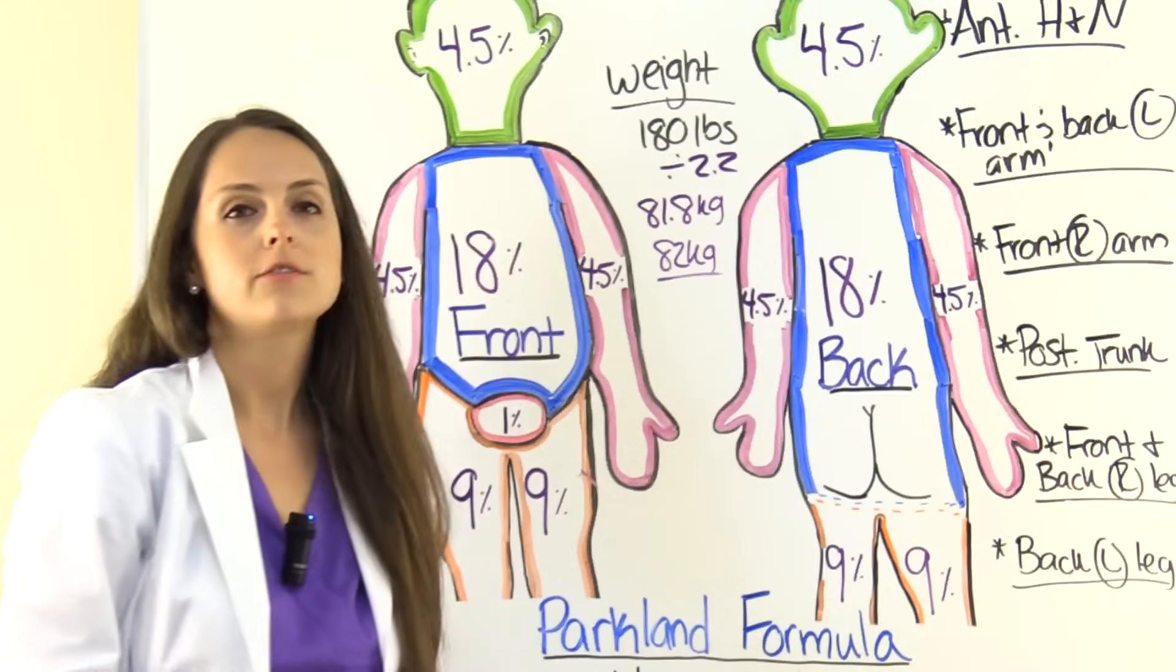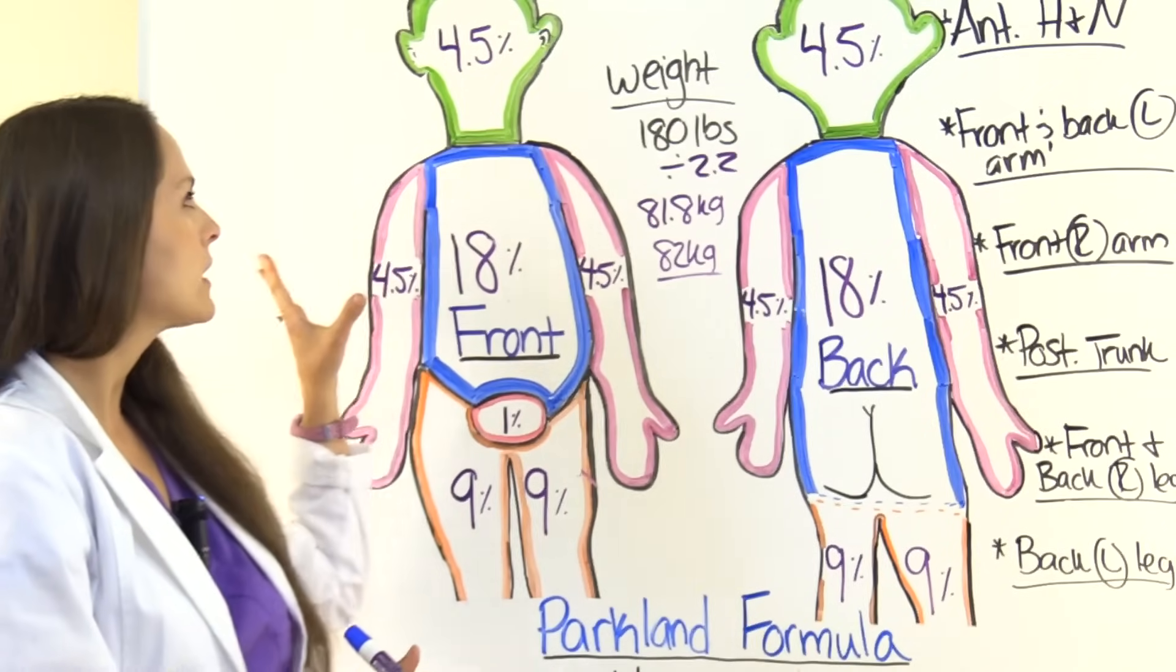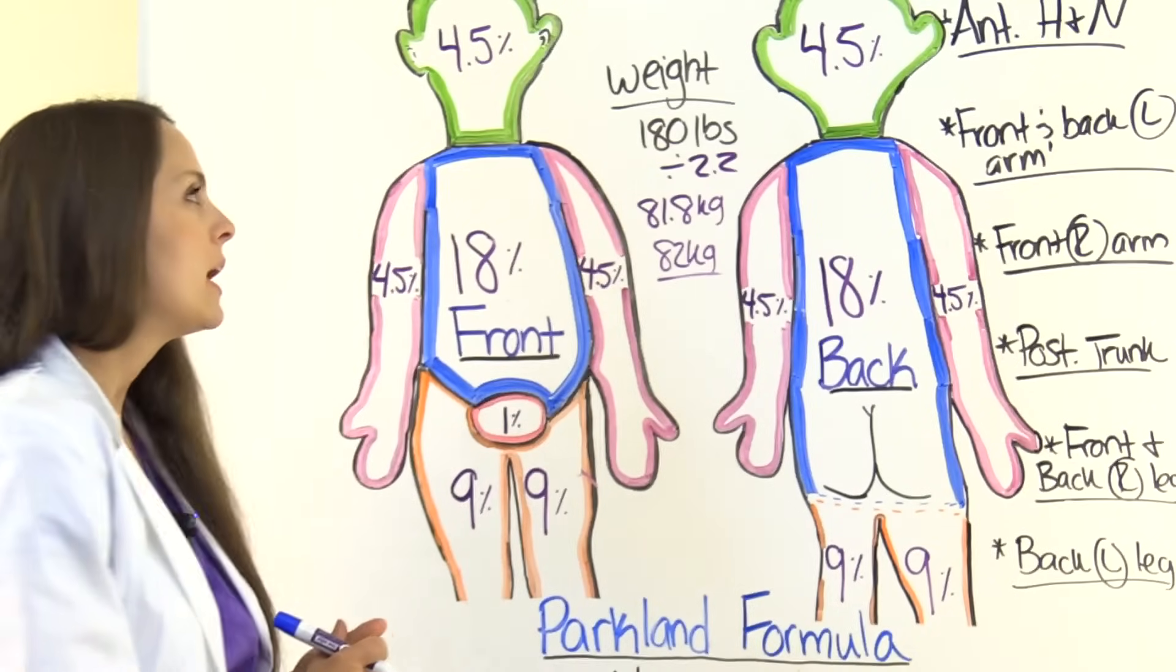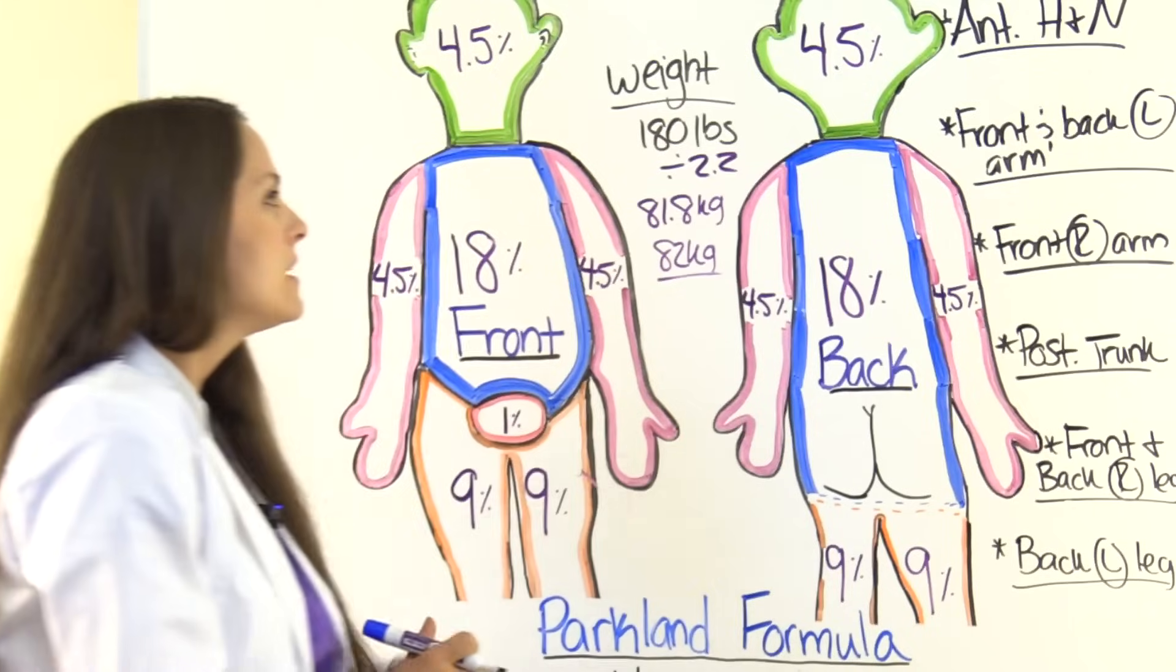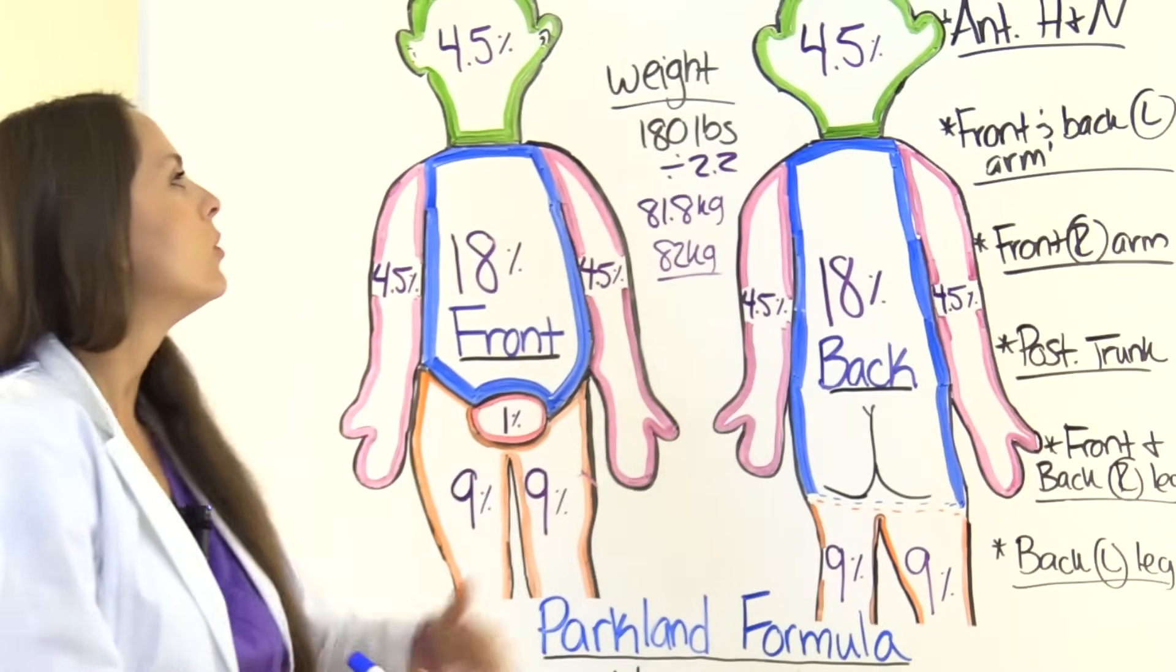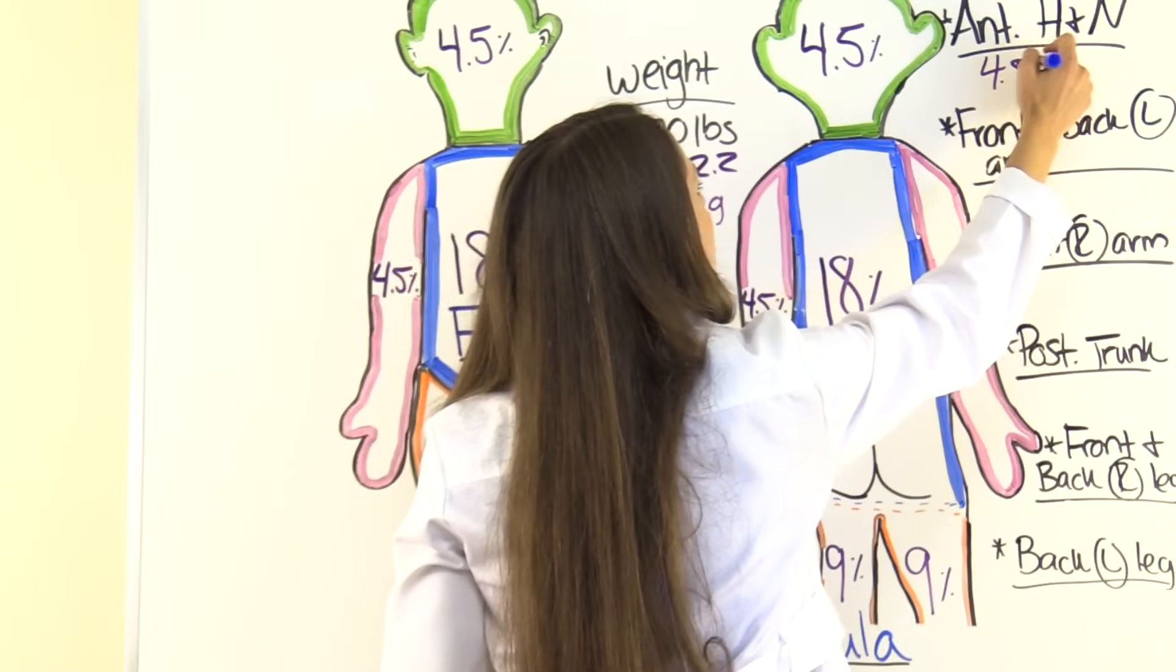Okay, now for the tedious part. The hardest part to really solve in this whole formula is we've got to calculate the percentage of the body surface area that is burned. Okay, so we have the anterior head and neck. What does that equal? That equals 4.5%. So we'll write that in.